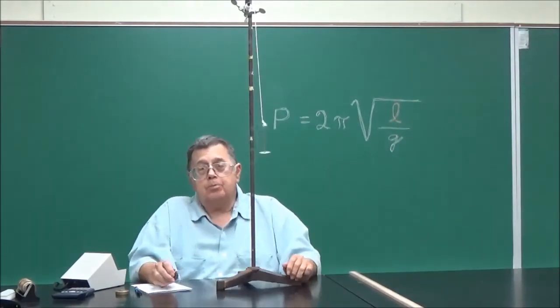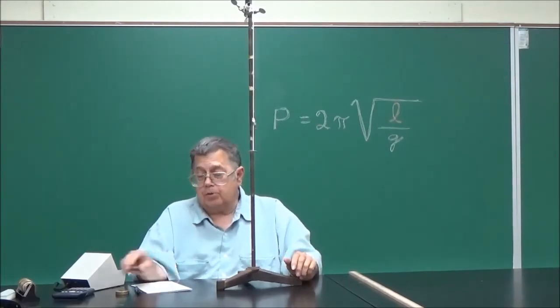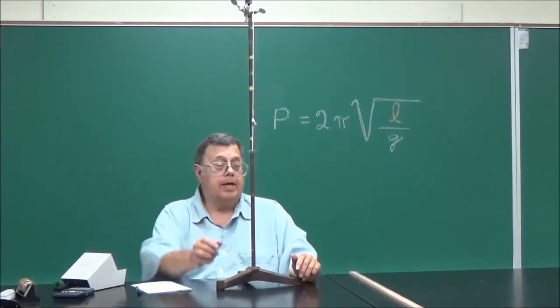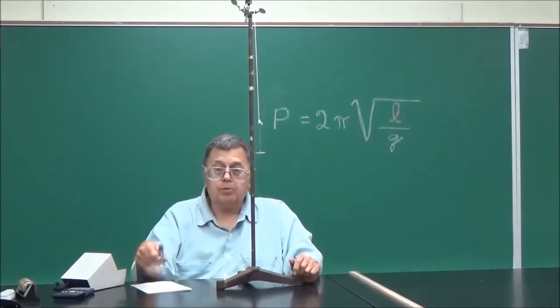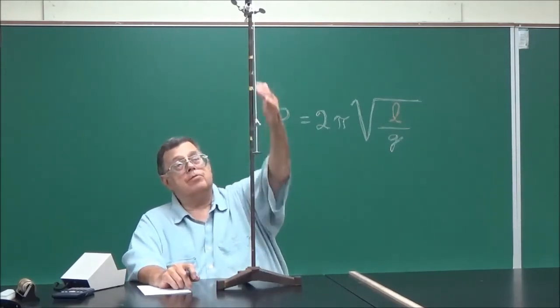If you want the actual period, you have to divide these times that I just gave you by 5 because we're timing 5 back and forth swings. And so that would be your homework if you would like to replay this a little bit and write down the figures for 80 centimeters and for 40.